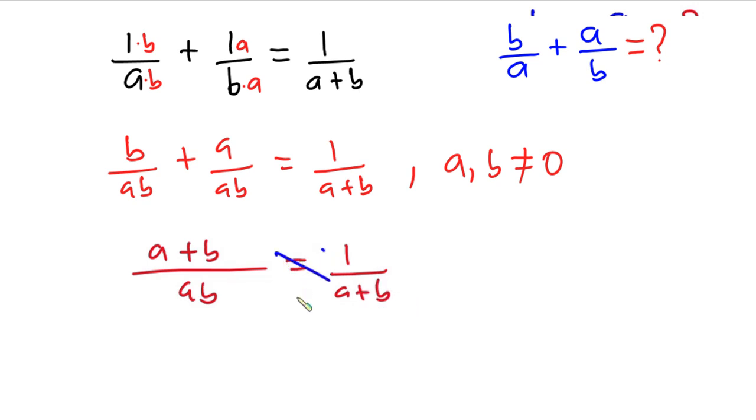Now if you cross multiply, we have a plus b squared is equal to ab, and I'll call this equation 1.